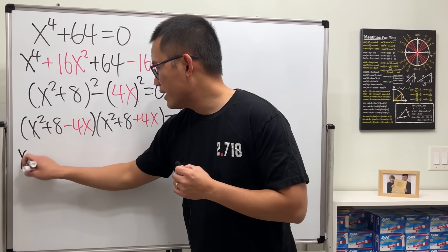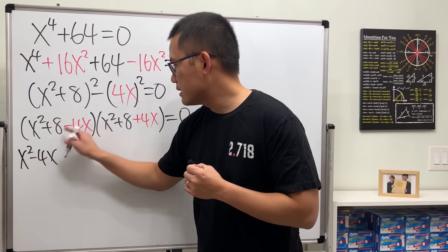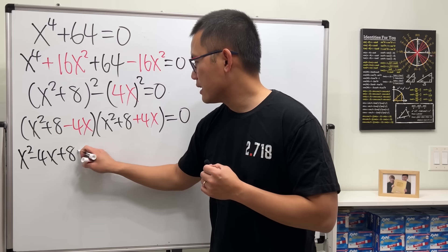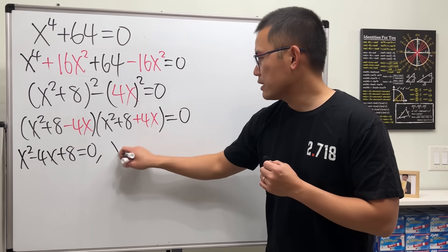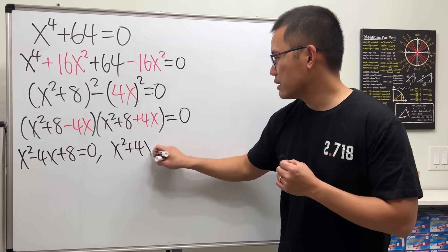For the first one, we have x squared minus 4x plus 8. That's equal to 0. And then, for the second one, this is what we have.